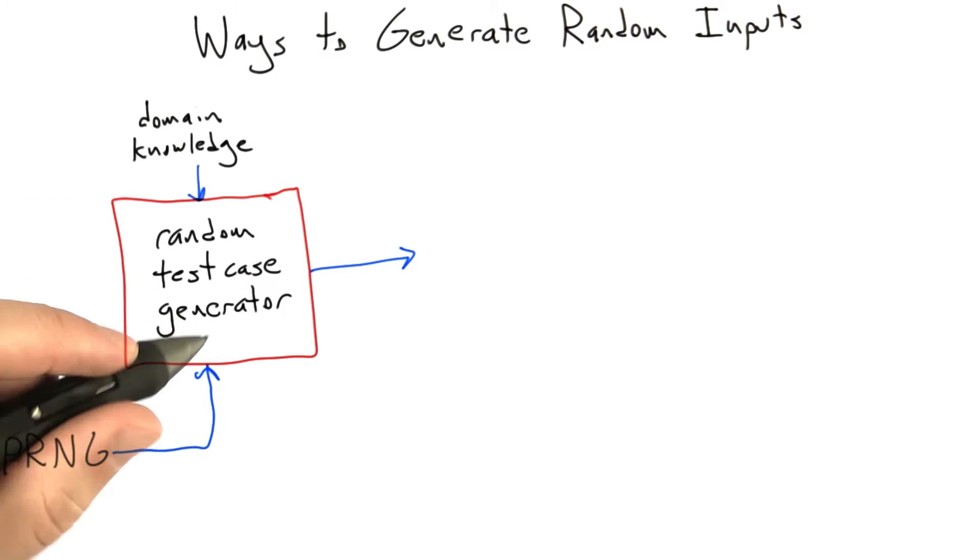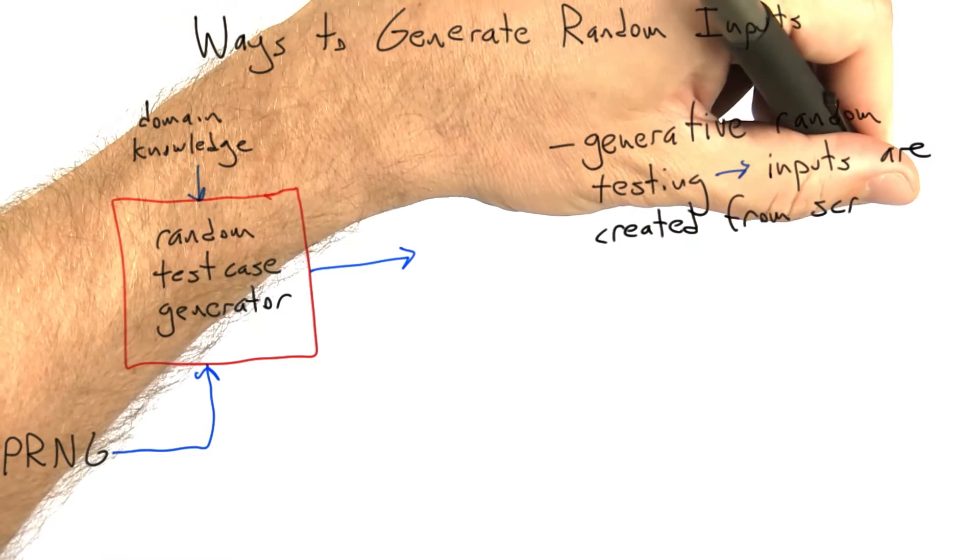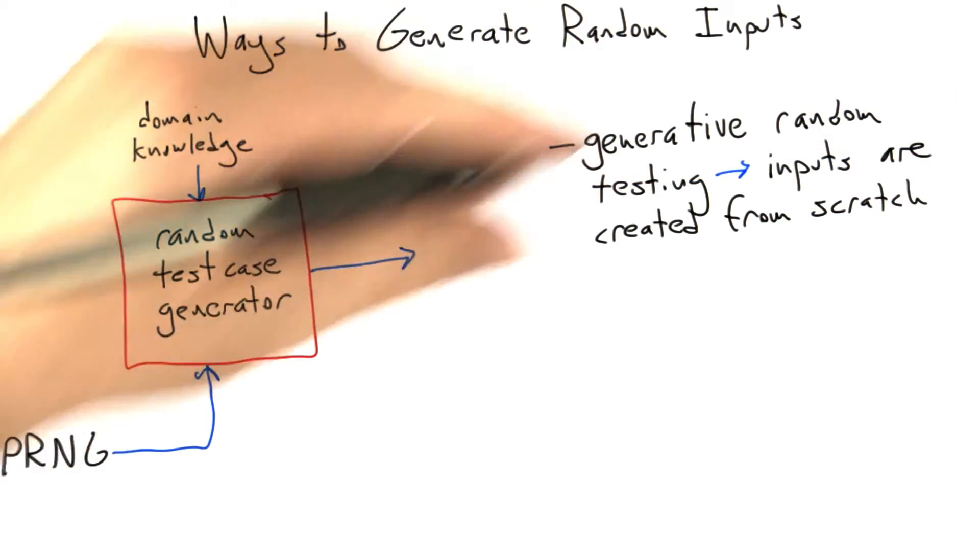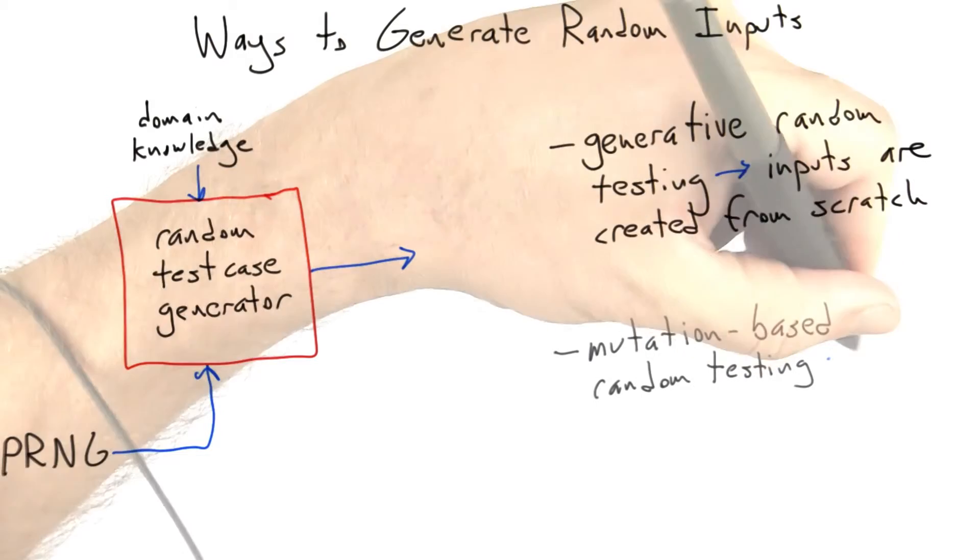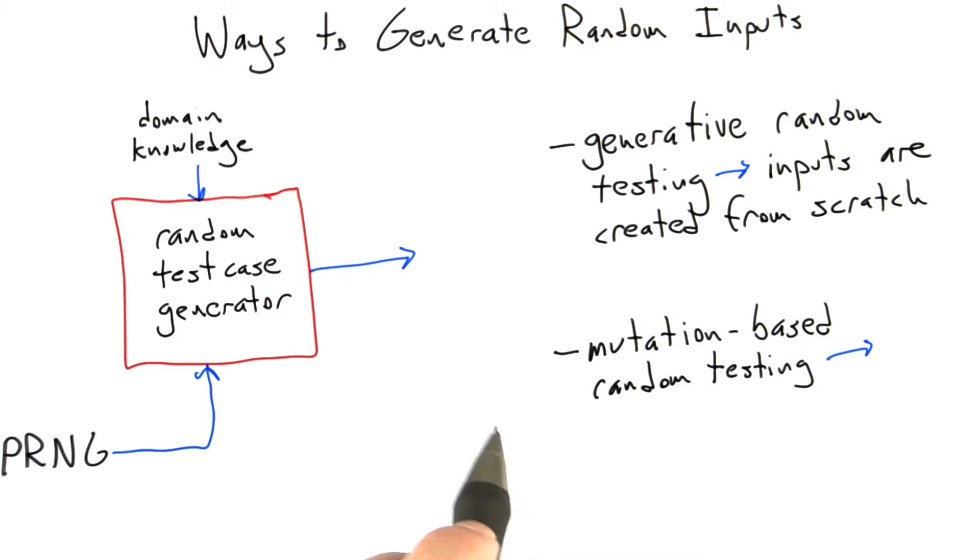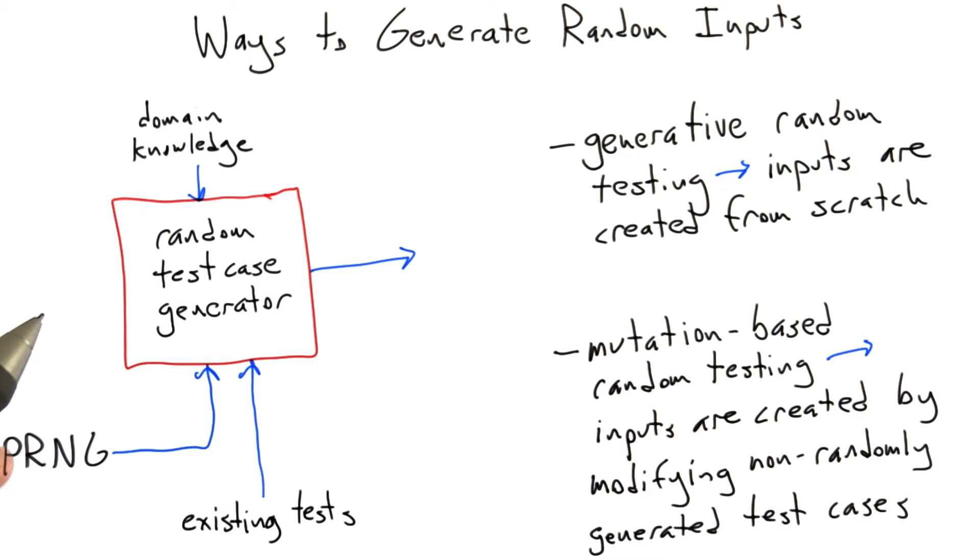But it turns out all of these ways of generating input are variations on a single theme, which we call generative random testing. Generative random testing simply means that inputs are created from scratch. There's an entirely different approach called mutation-based random testing, where inputs are created by randomly modifying existing non-randomly created inputs to the software under test. This changes our diagram a little bit, so that we have a separate source of input, which is the existing test case.